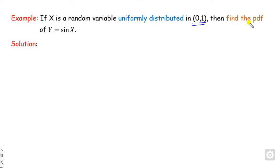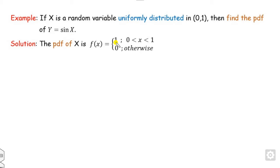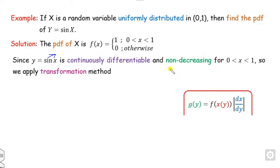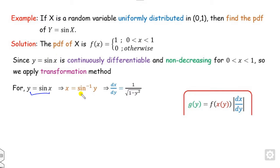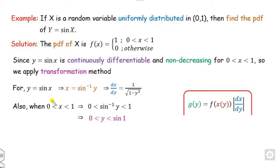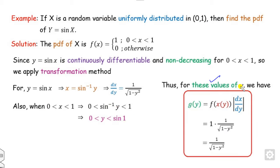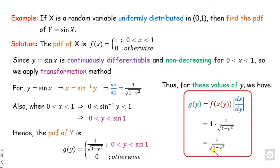Example 4: if X has a uniform distribution on (0,1), find the pdf of Y = sin(X). The pdf of X is 1/(b−a). The function sin(X) is continuously differentiable (trigonometric function), and its derivative cos(X) is positive in the domain, so it is non-decreasing. Calculate x = sin⁻¹(y) and dx/dy. Since x lies between 0 and 1, calculate the corresponding range of y using the inverse sine. Under this range of Y, substitute the values and obtain the required pdf.